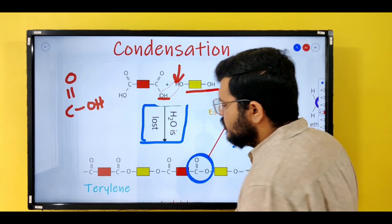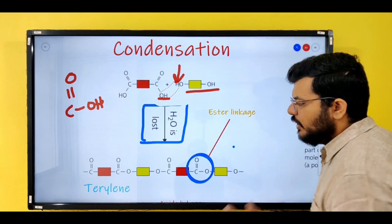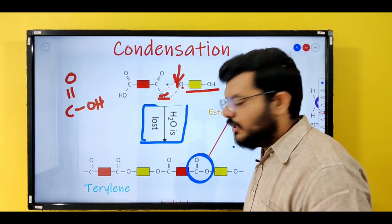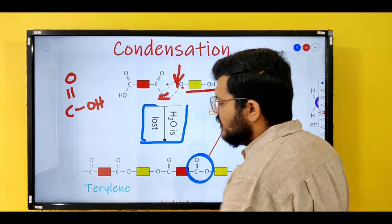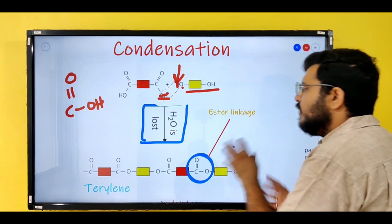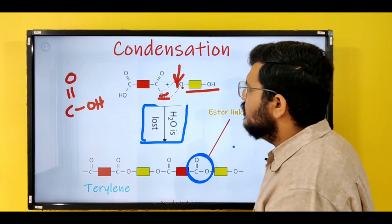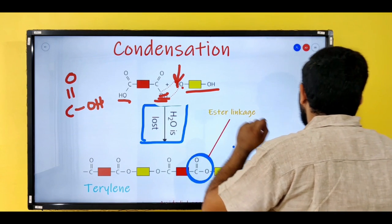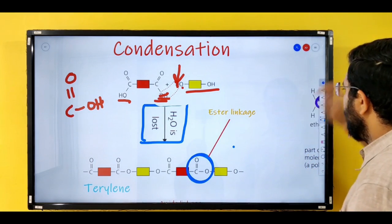When water is lost, a bond is formed — COOH with no H in place of OH and H. The oxygen forms a bond with carbon. This specific bond is known as ester linkage, and terylene is an example of a polymer that forms with the help of ester linkage. The monomers in terylene are two carboxylic acid groups on either side and two alcohol groups on either side of the other molecule. This is one example of a condensation polymer.